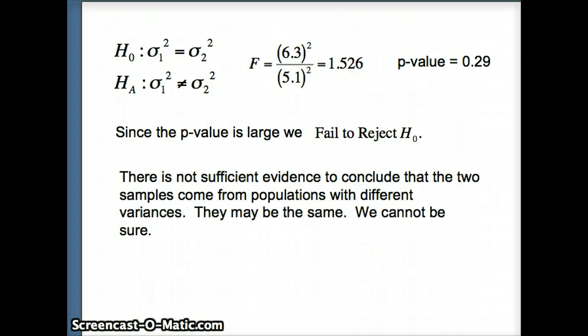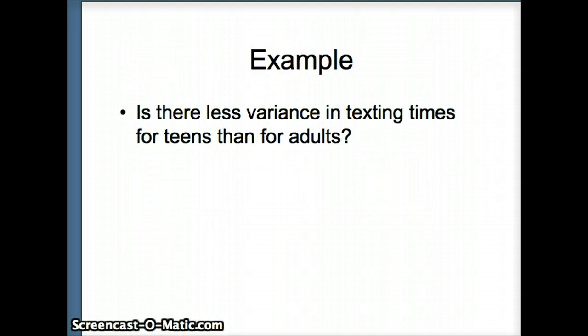So there is not sufficient evidence to conclude that the two samples come from populations with different variances. They may be the same. We cannot be sure. Let's take a look at one more example. Is there less variance in texting times for teens than for adults? So we looked at this data in an earlier lesson.